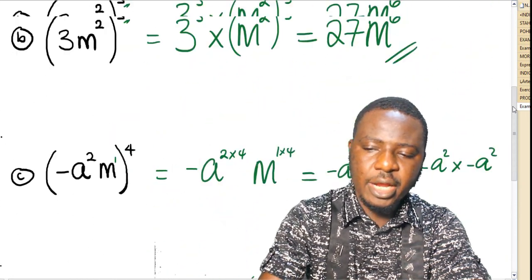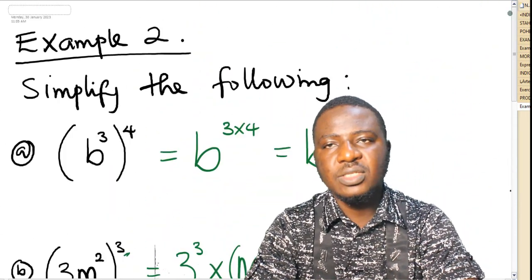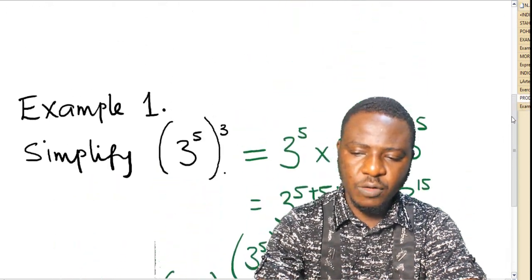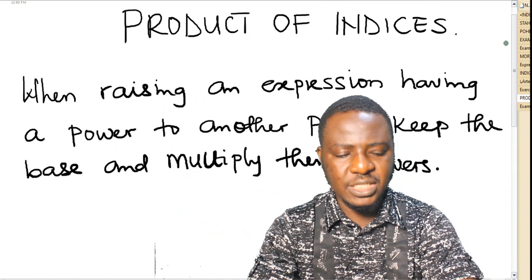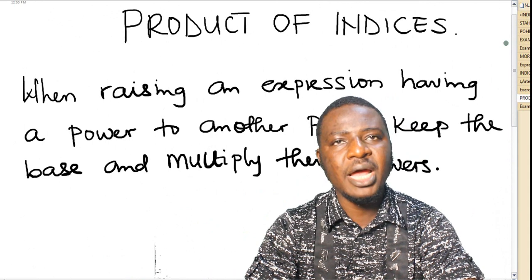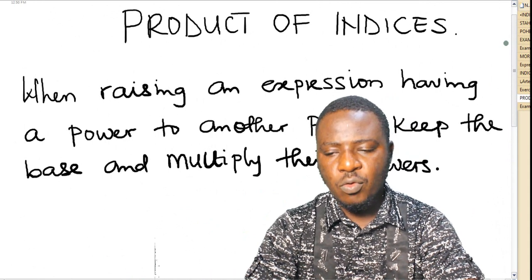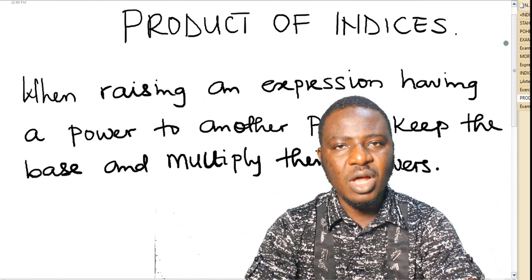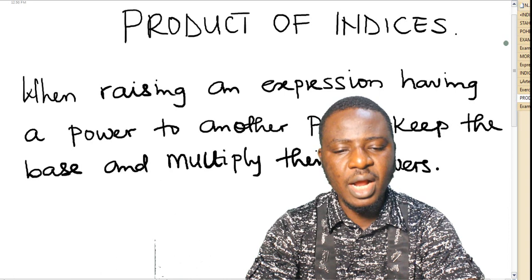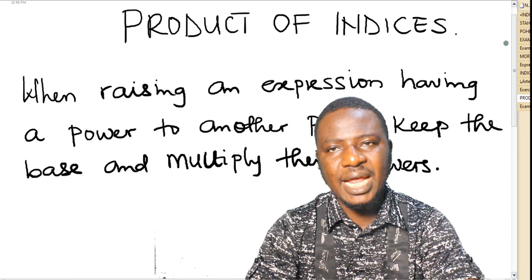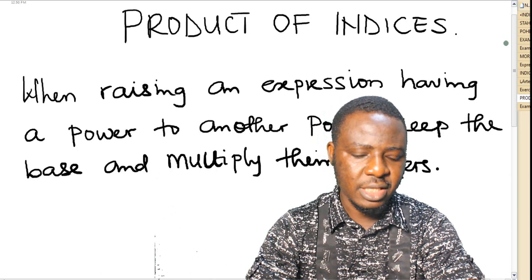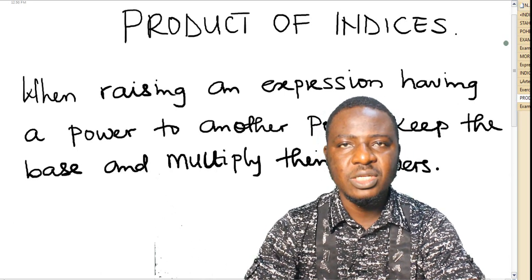That brings us to the end of today's class. In today's class, we have been able to look at the product of indices. In the product of indices, we said that when raising an expression having a power to another power, you keep the base and multiply their powers. Thank you for being attentive in today's class. Please subscribe to our channel if you are yet to do that, and use the comment section to interact with us, as well as like and share with your friends so they can follow our classes. Thank you and do have a nice day. See you in our next class.